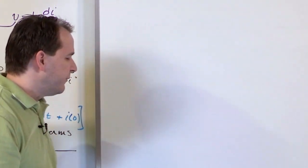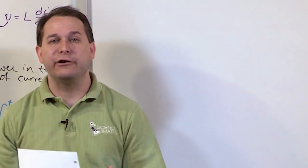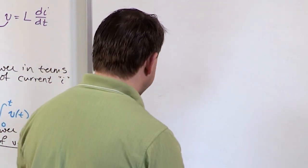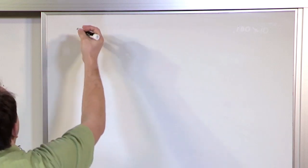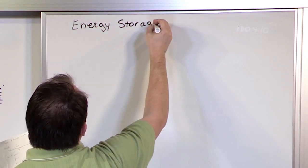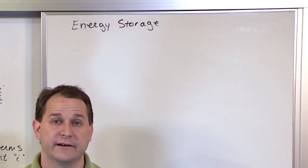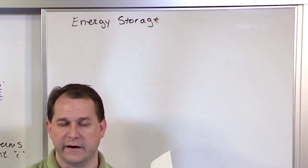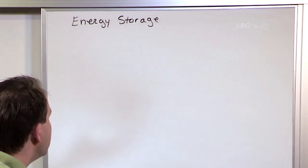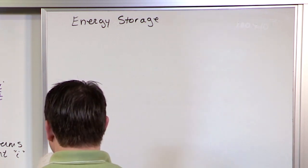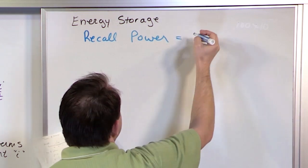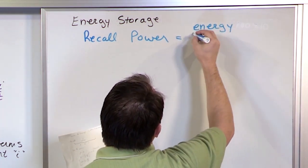To recap: power in an inductor is energy flow. It can be positive — meaning you're depositing energy to the inductor — or negative, meaning the inductor is delivering stored energy back to you. Now we want to talk about energy storage. Energy is the potential energy in the magnetic field. Power is the flow of energy. They're very closely related but not the same thing.